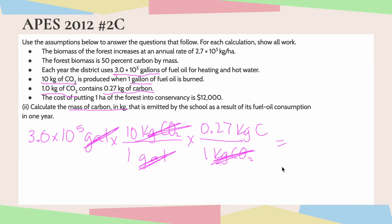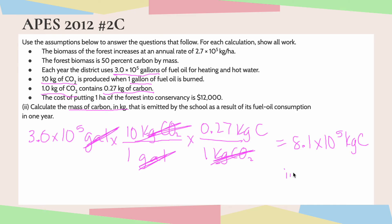Now I'm going to go ahead and multiply. I'll start by taking 10 and multiplying it by 0.27 to get 2.7. Then I'm going to multiply 2.7 by 3.0, which gives me 8.1. So that is 8.1 times 10 to the fifth kilograms of carbon. This is the amount of carbon that is emitted by the school as a result of its fuel oil consumption in one year.